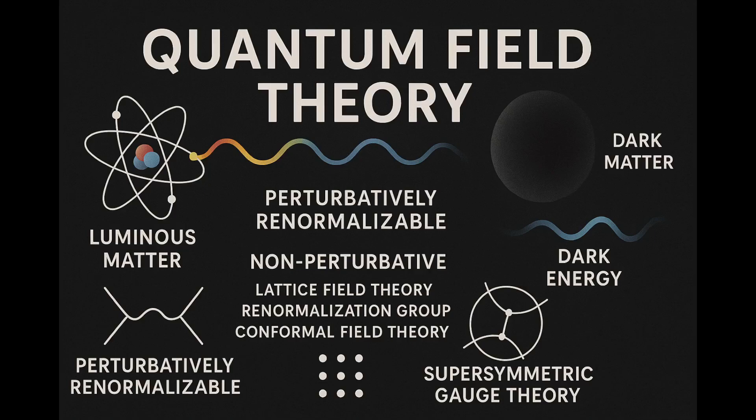Quantum field theory is perturbatively renormalizable, meaning its infinities can be tamed through systematic approximation schemes. Yet QFT also admits non-perturbative formulations, either directly through lattice field theory, the renormalization group equation, and conformal field theory, or indirectly via exact solutions, especially in two dimensions and increasingly in four, through the structure of supersymmetric gauge theory.